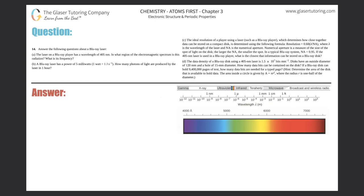Number 14: answer the following questions about a blu-ray laser. Part A: the laser on a blu-ray player has a wavelength of 405 nanometers. In what region of the electromagnetic spectrum is this radiation, and what is its frequency?